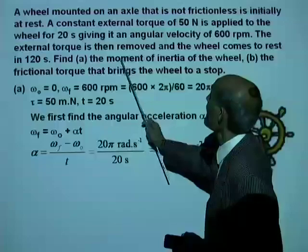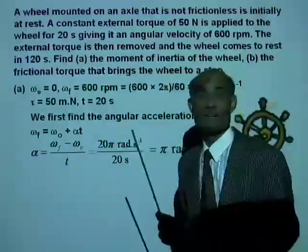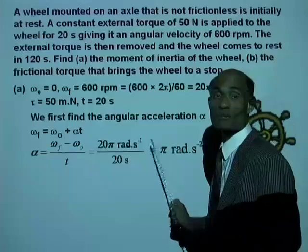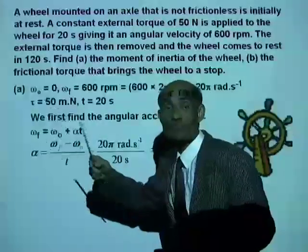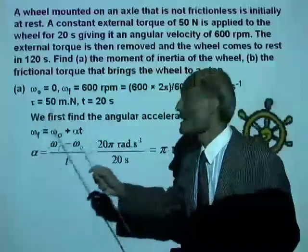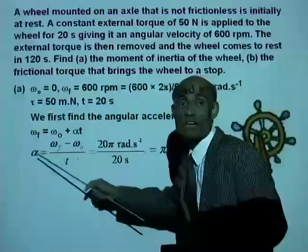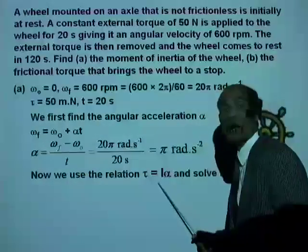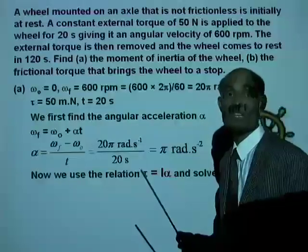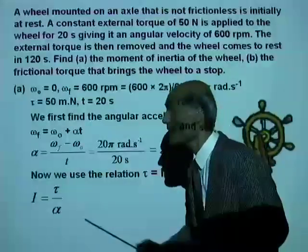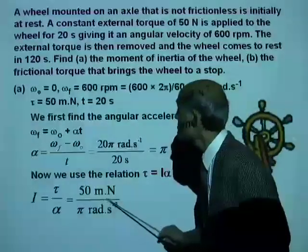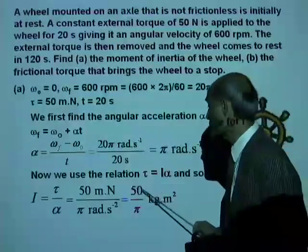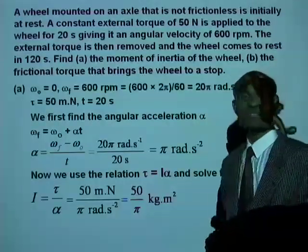For part A, find the moment of inertia. Using τ = Iα, we get I = τ/α = 50 / π kg·m². We can leave it in exact form as 50/π kg·m².